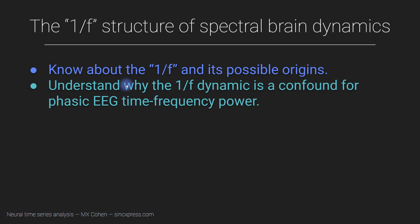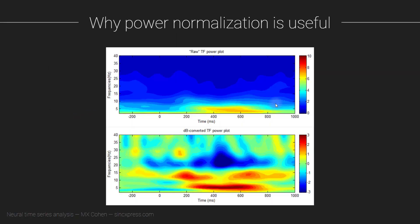What I'm going to focus on in this video is explaining why these 1 over f dynamics provide a potential confound for looking at short lasting phasic EEG time frequency features, in particular power. And I'm going to start by just giving you an illustration with real data.